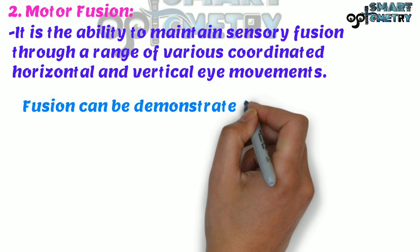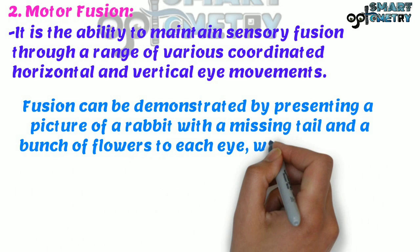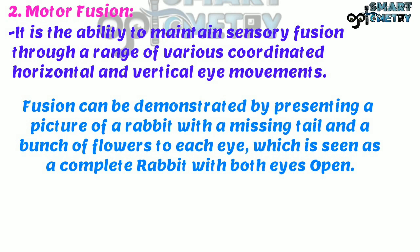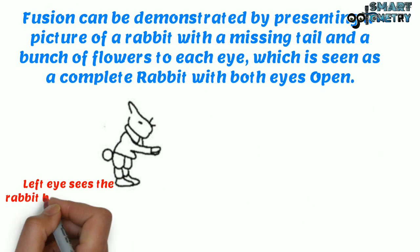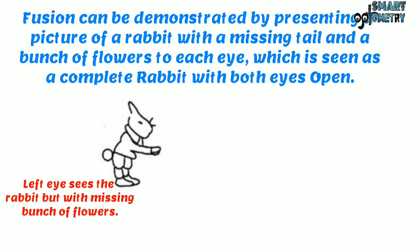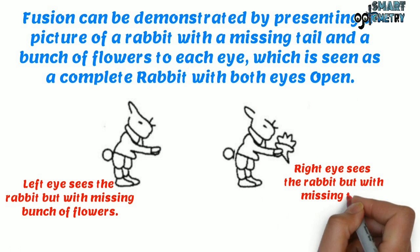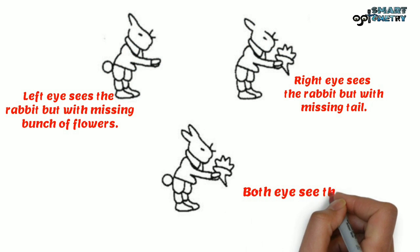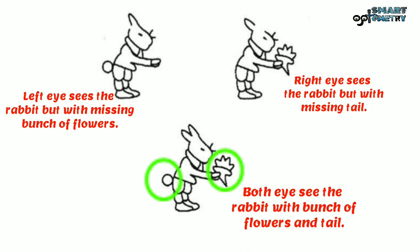Fusion can be demonstrated by presenting a picture of a rabbit with a missing tail and a bunch of flowers to each eye, which is seen as a complete rabbit with both eyes open. One eye sees a rabbit with a missing bunch of flowers, while the other sees a rabbit with flowers but a missing tail. When both eyes are open and the images are fused, one complete picture of a rabbit with a bunch of flowers and a tail is seen.